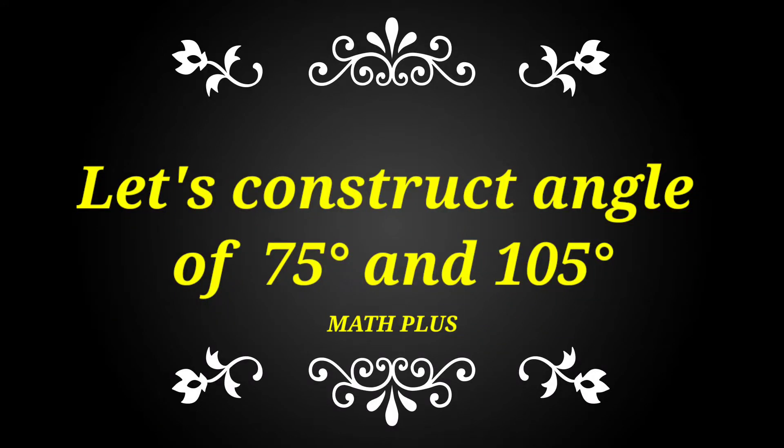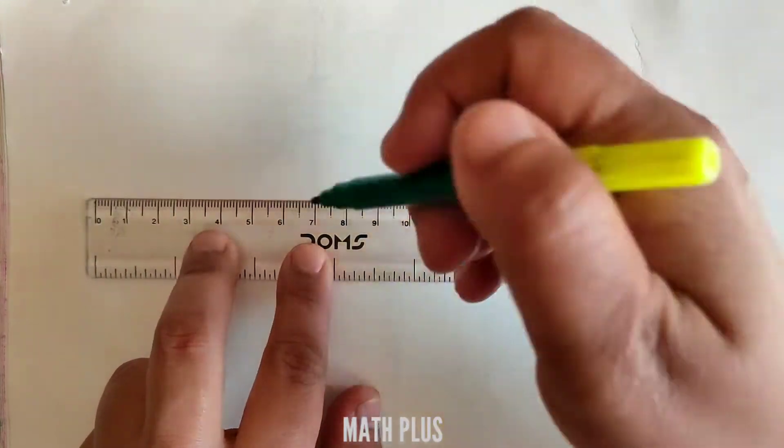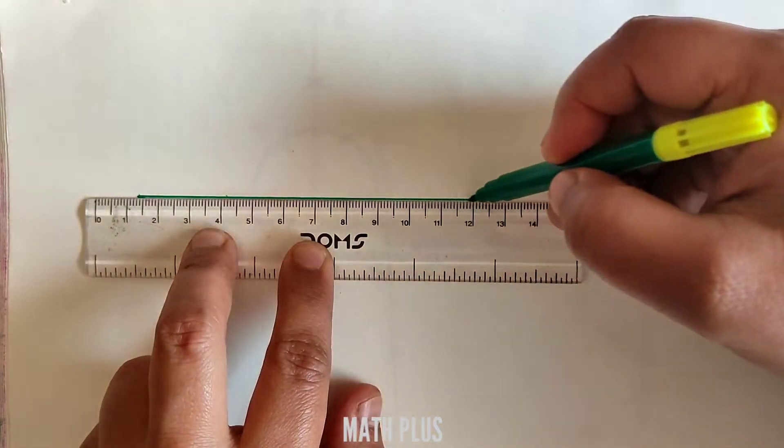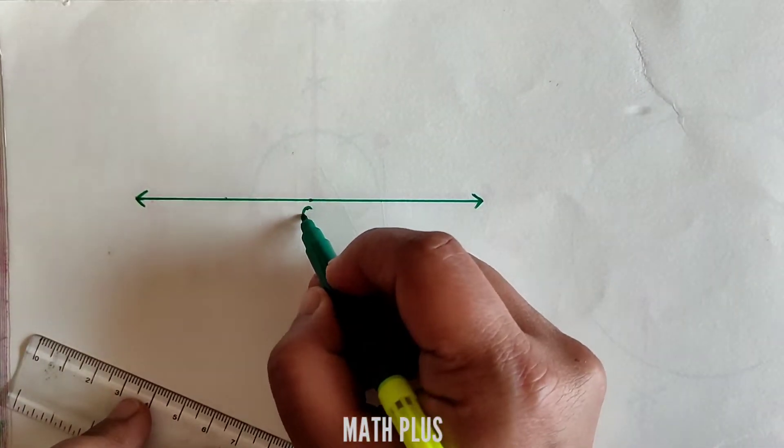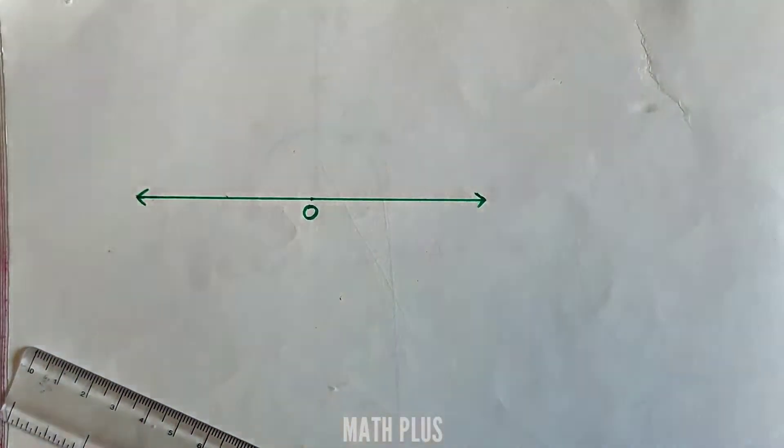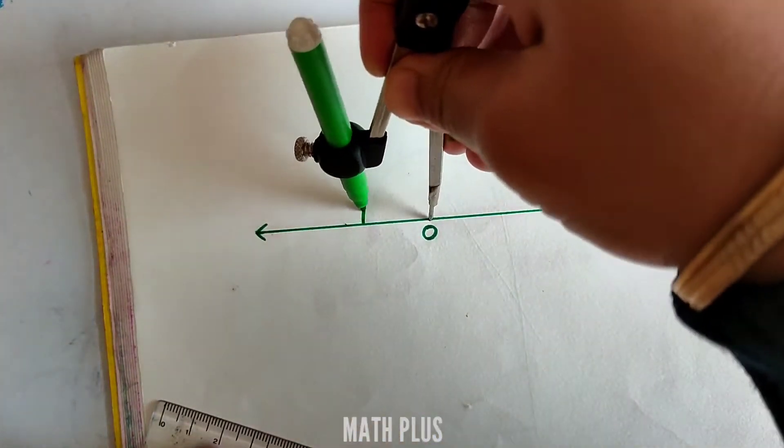Hello everyone, welcome to Math Plus. Today we are going to construct angles of 75 and 105 degrees. Let us start with 75 degrees. For 75 degrees you need to make an angle of 60 and 90 degrees. For that, first of all make a line with a point O on it. Using a compass with a certain radius, draw a semicircle above the line.